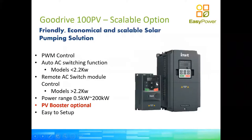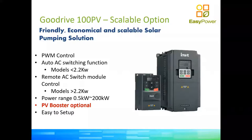The GoodDrive 100, or GV100, has a built-in PWM controller — a pulse-width modulator. Some models have an auto-switching function up to 2.2 kilowatts with remote AC switch module control. The power range can go from 500 watts to 200 kilowatts. The PV booster is optional compared to the BPD where it is built in. Setup is very basic — almost plug-and-play, with very minimal parameters to configure: motor size, operating voltage, motor frequency, and a few optional parameters for auto-start, restart, and AC usage. Documentation is very good.